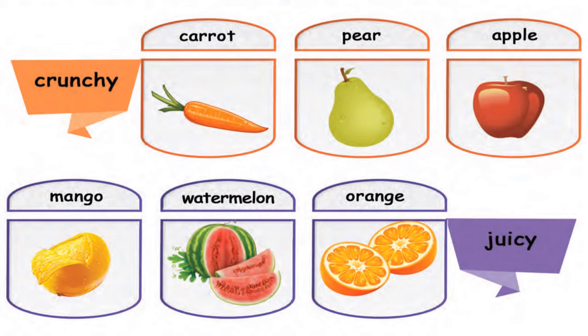Crunchy. Carrot — C-A-R-R-O-T — Carrot. Pear — P-E-A-R — Pear. Apple — A-P-P-L-E — Apple. Juicy. Mango — M-A-N-G-O — Mango. Watermelon — W-A-T-E-R, M-E-L-O-N — Watermelon. Orange — O-R-A-N-G-E — Orange.